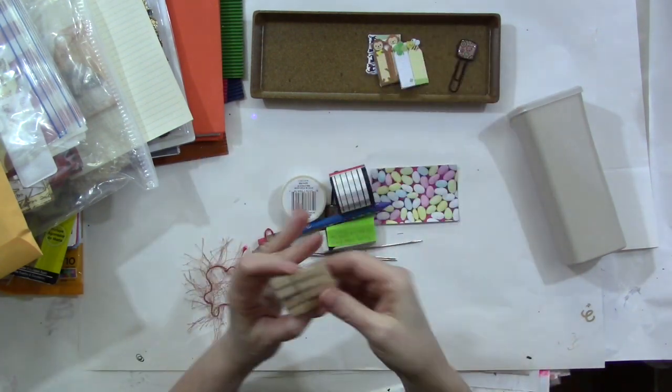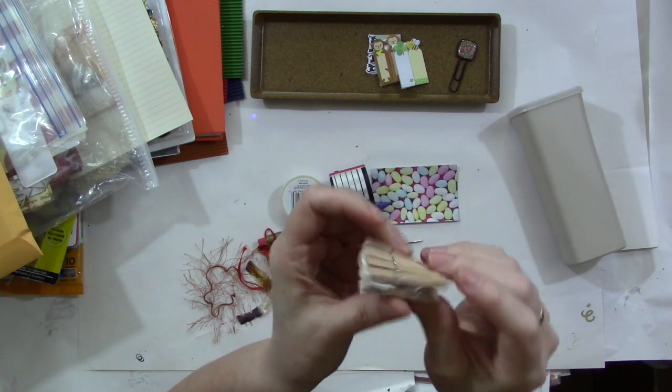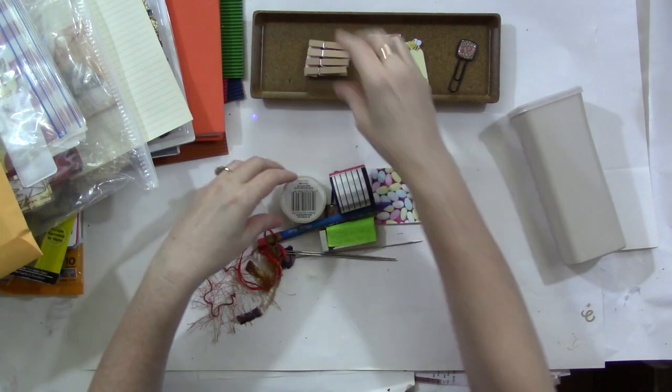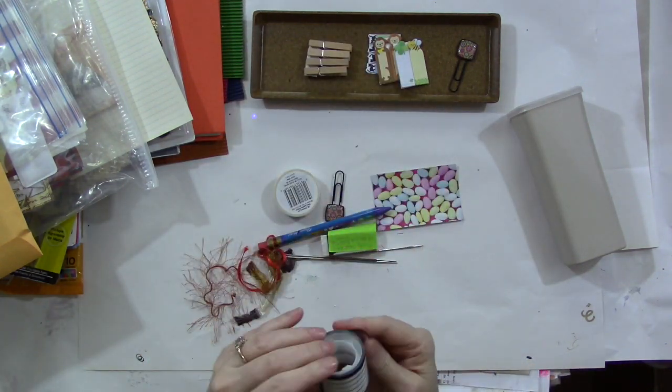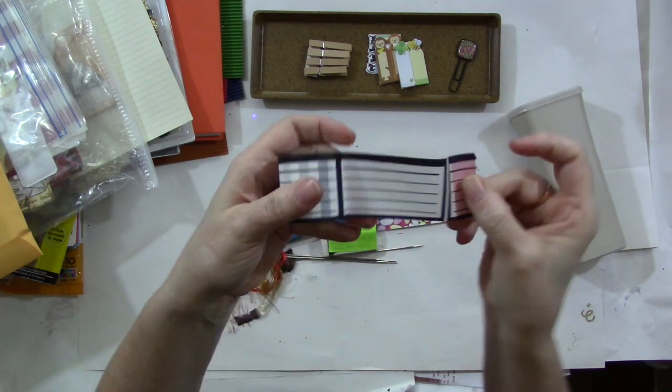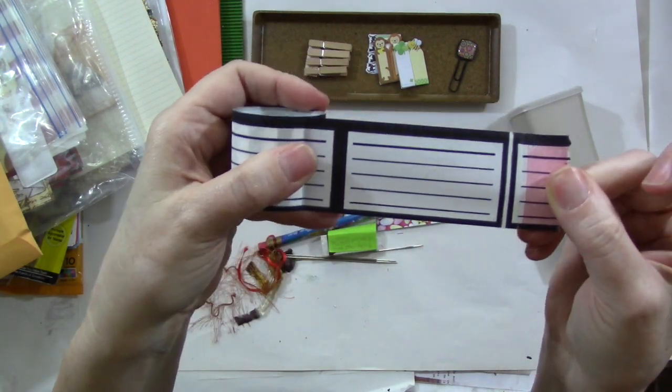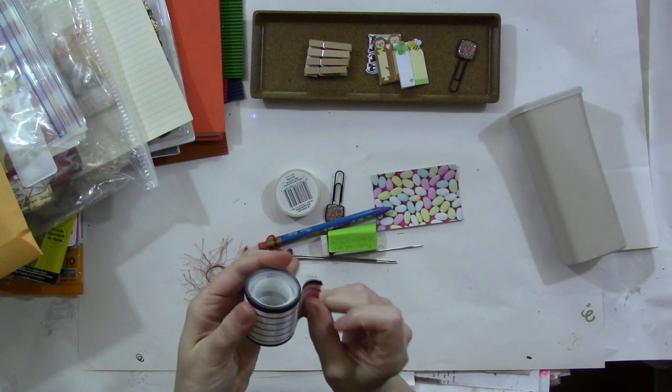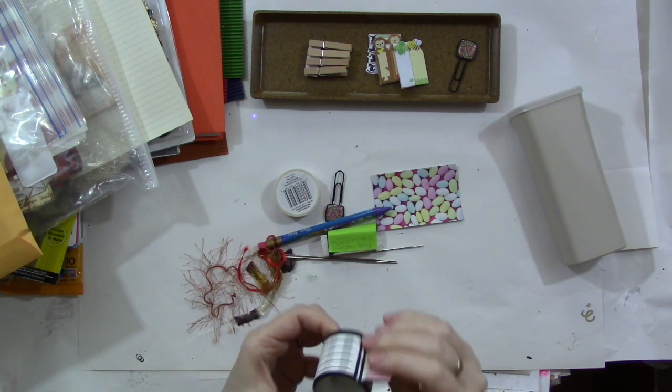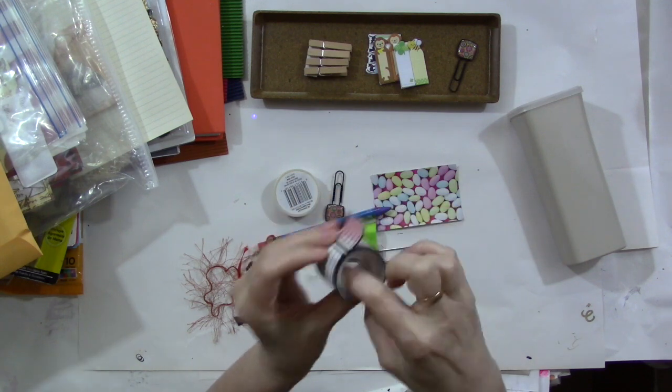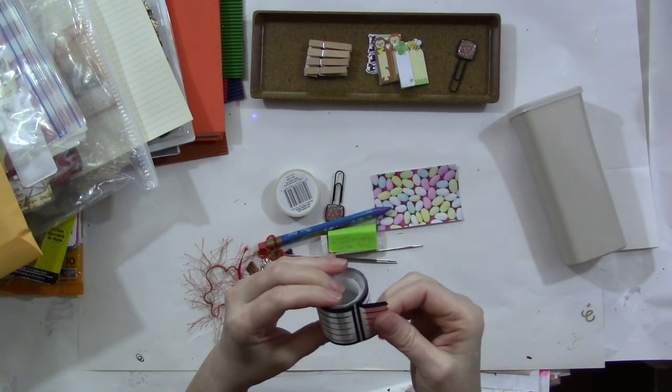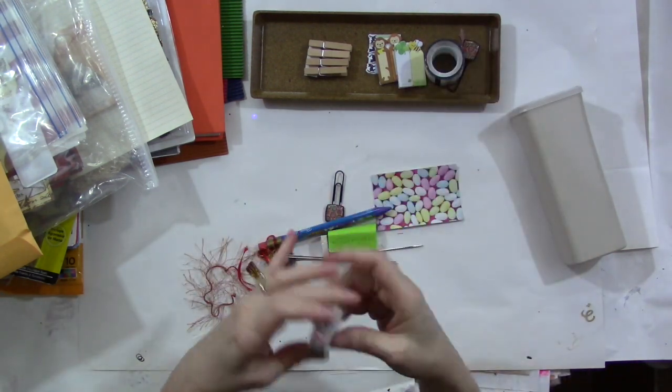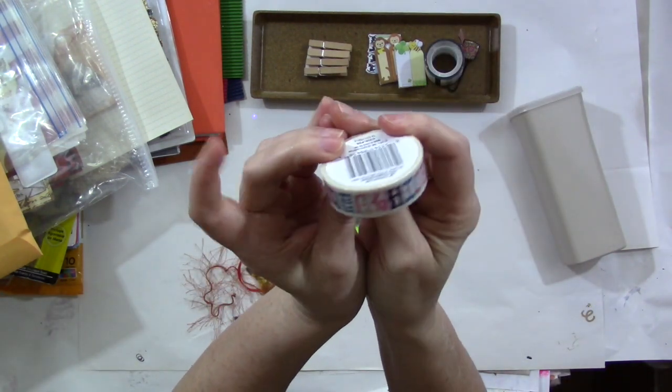Some little small clothespins. And tapes, oh these are like, this is a roll of labels. Look at that, it looks like washi tape but they're just sticky labels on a roll thing like it would go in a tape holder. But I'm thinking it's going to make some really interesting washi tape. And here's some actual washi tape to go with.